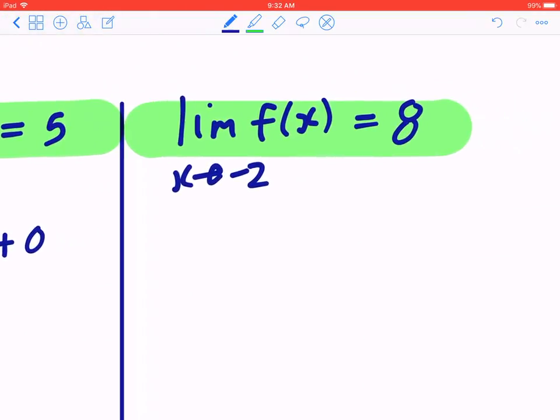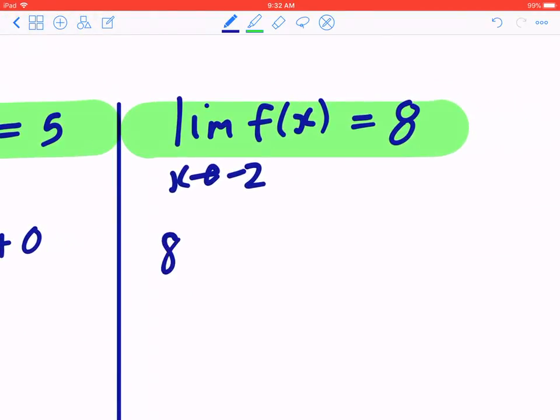Likewise, if you look at the second column, you plug in x to be negative two, and this equals a times negative two squared plus b times negative two.